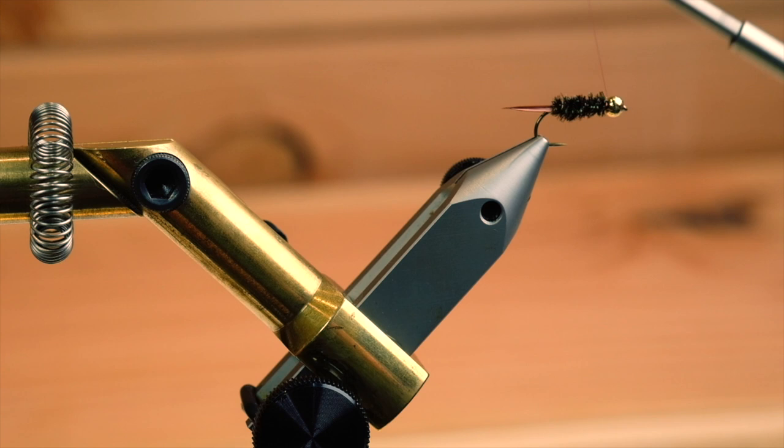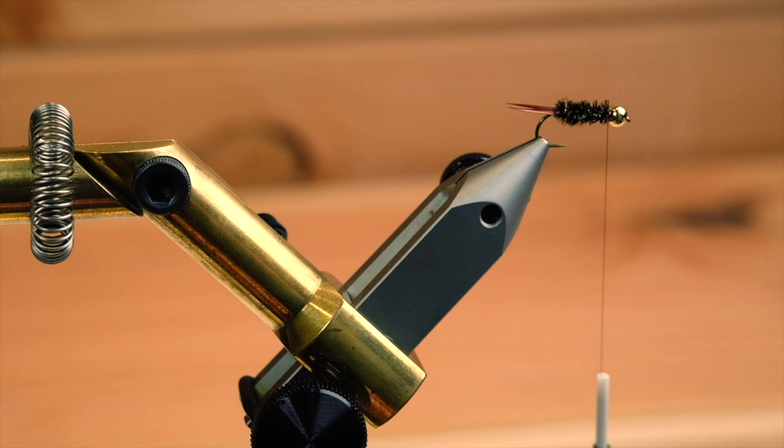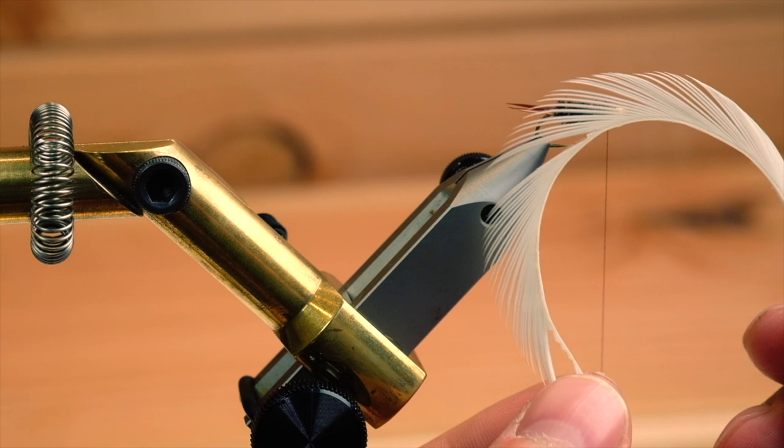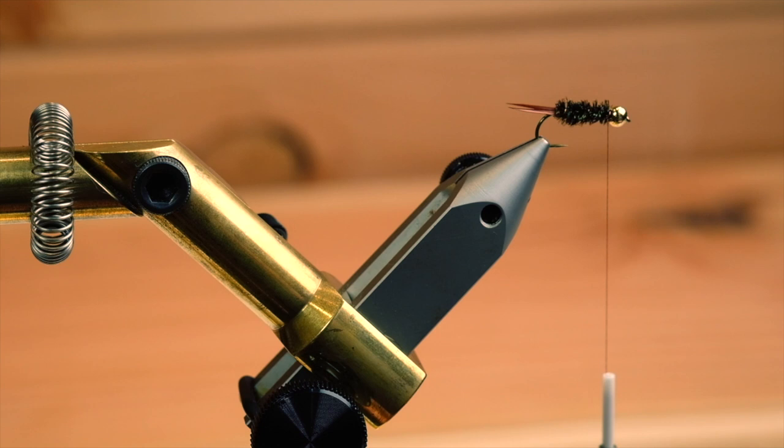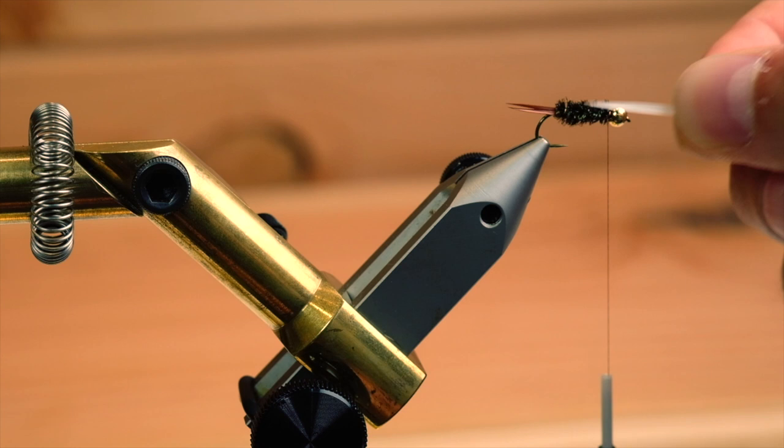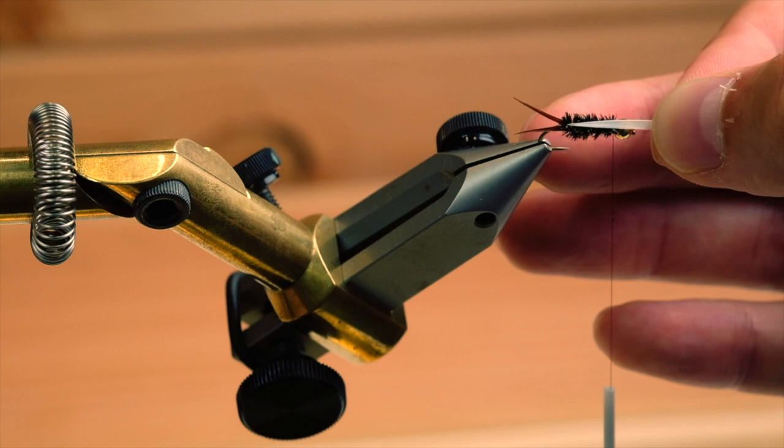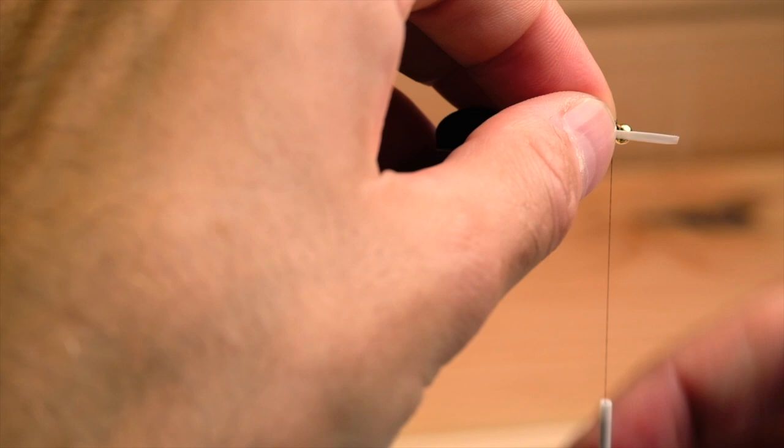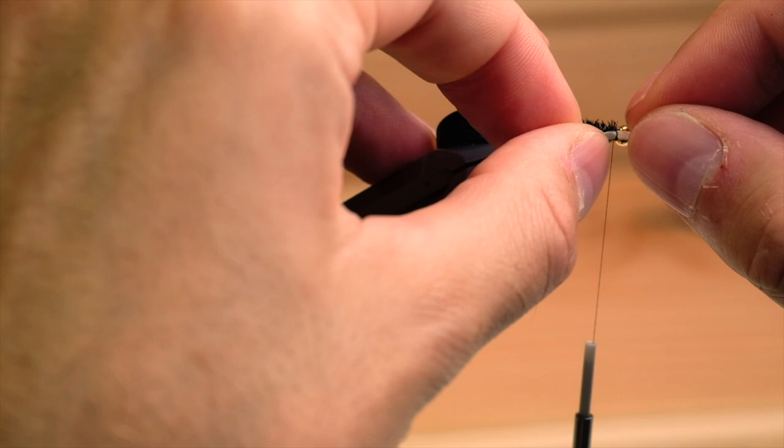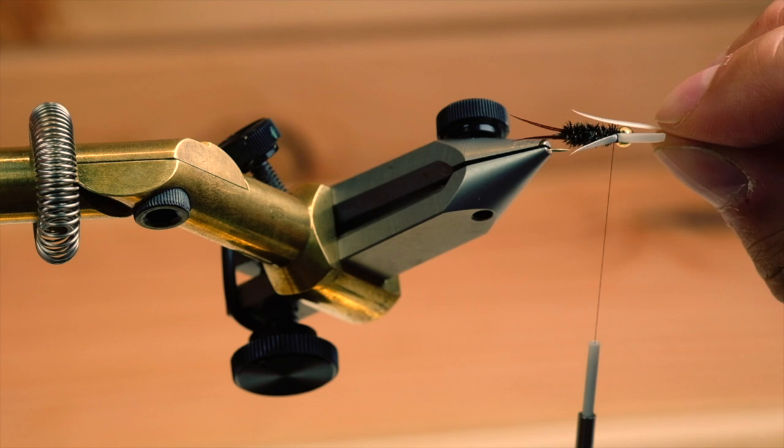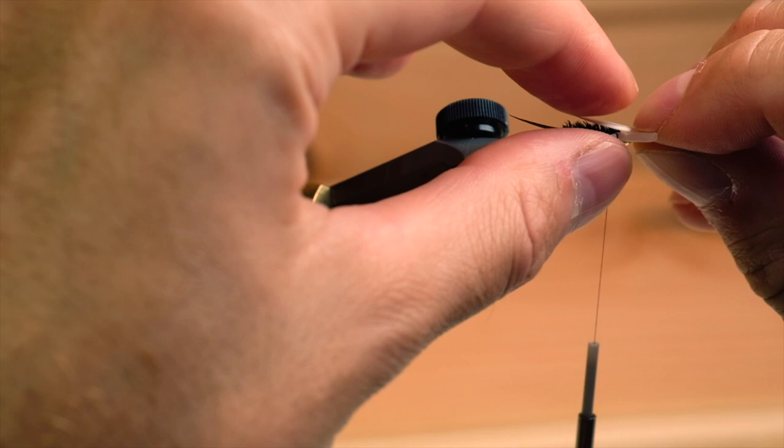The next thing to do is tie in some biots. As you can see they come on a little string like this and I like to take two from the bottom part because they're slightly less tapered than on the top. Measure them, it's about the length of the body. Two turns, you can move it around a little bit if you like. Take the other one, measure it so it's the same length.